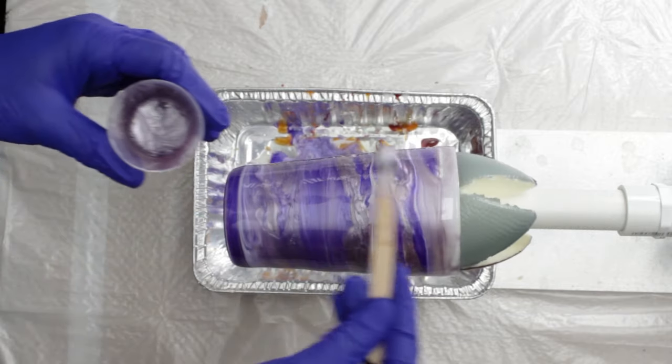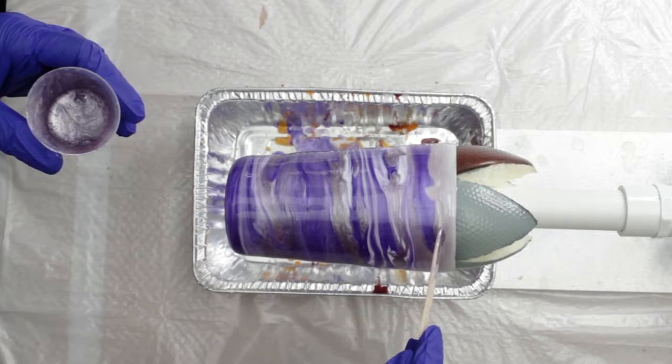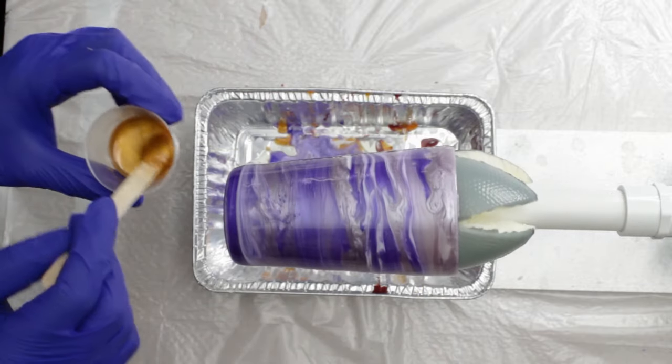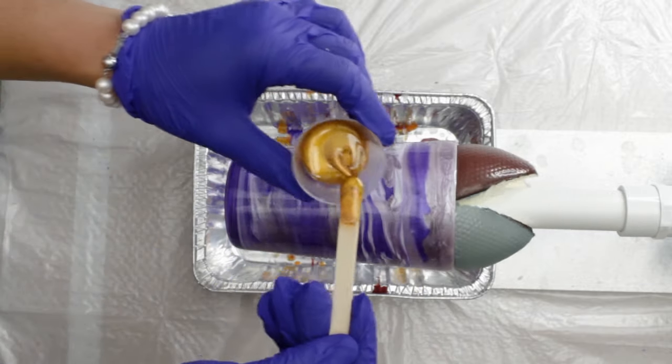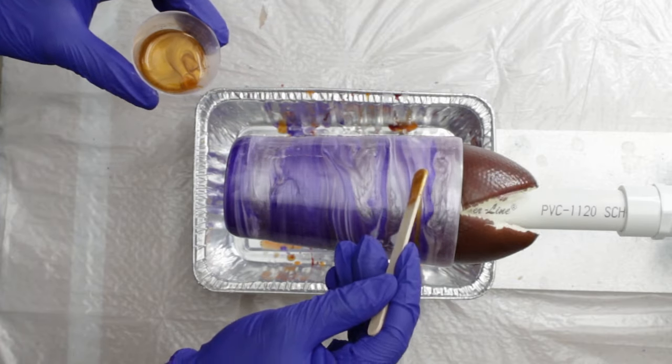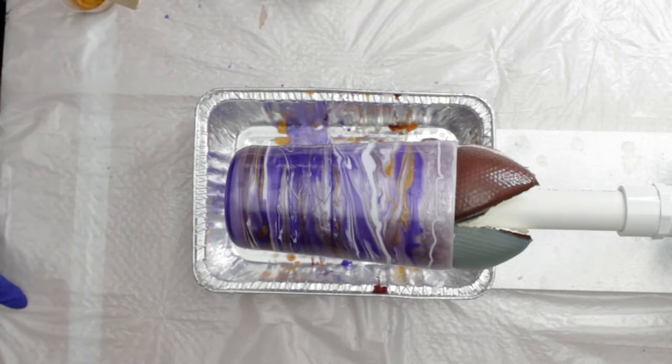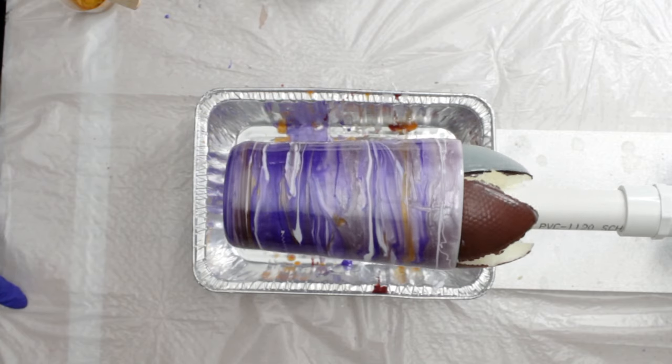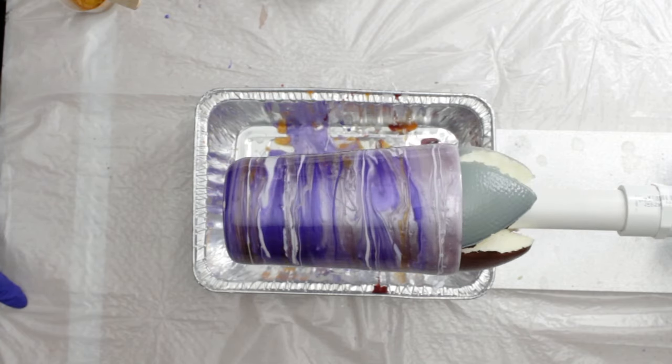Once it's all covered, she drizzles some more resin across the mug wherever she thought it needed a bit of a lift. Now it's time to add the gold, but because she didn't want it to overpower the other colours, she decided to only use it to add a highlight here and there. The colours will continue to blend and move around the cup, so the finished cup will look a bit different to how it is at the moment.